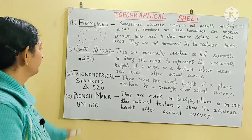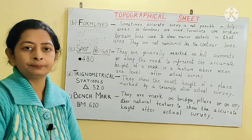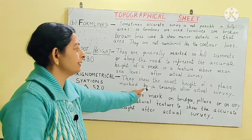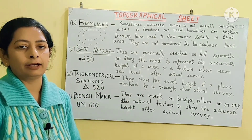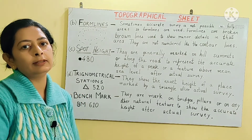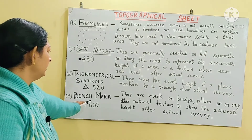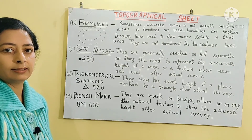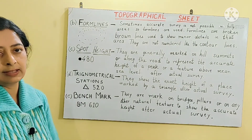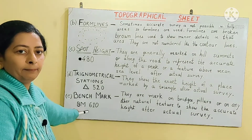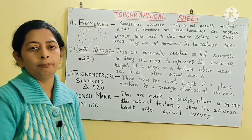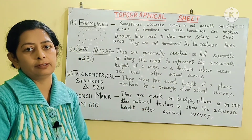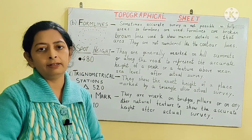Trigonometrical stations: some areas are divided into triangles and surveyed, showing the exact height of a place marked by a triangle after actual survey — this is the accurate height of that place. The last method is the benchmark. 'BM610' or similar notations may be written; BM stands for benchmark. These are marks on bridge pillars or other natural features of great height, showing the accurate height after actual survey, also measured from mean sea level, which is zero meters.